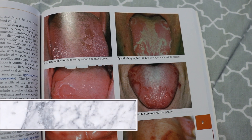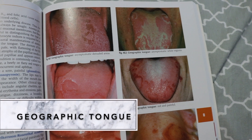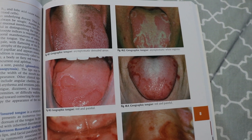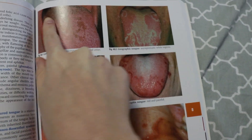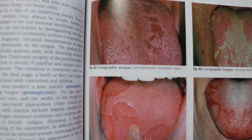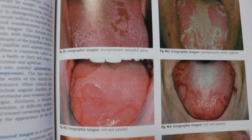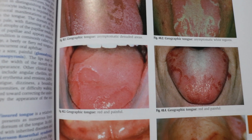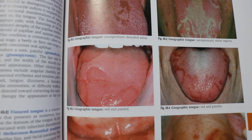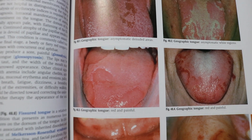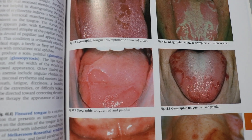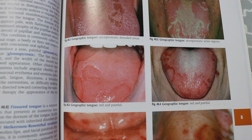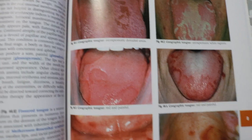Geographic tongue, or benign migratory glossitis, is a benign inflammatory condition characterized by irregular patches on the dorsum of the tongue. It looks like little different islands on the tongue. Women and young adults are most frequently affected, and it only happens in about 1% of the population. Usually there are no symptoms, but sometimes it can be irritated by spicy foods. The patches usually appear silently, persist for months or years, and then can spontaneously disappear and reoccur.